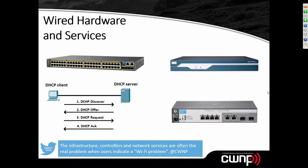In addition to RF hardware, we have the wired hardware and services. The infrastructure controllers and network services are often the real problem when users indicate a Wi-Fi problem. Users often say the wireless network or internet is down, when in reality their internet connection is down or the DHCP pool is depleted — neither of which has anything to do with Wi-Fi itself. Infrastructure hardware means primarily switches and routers.